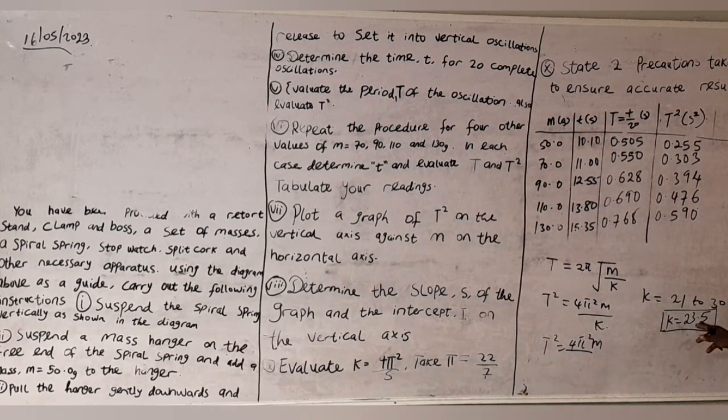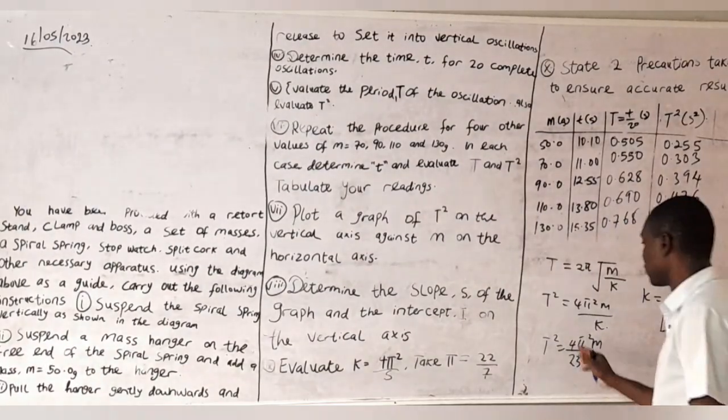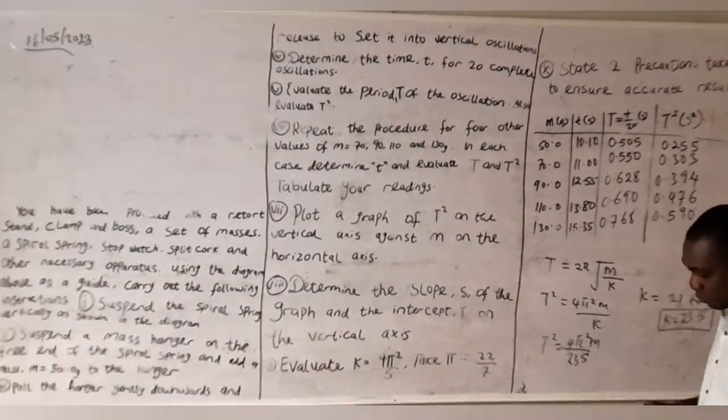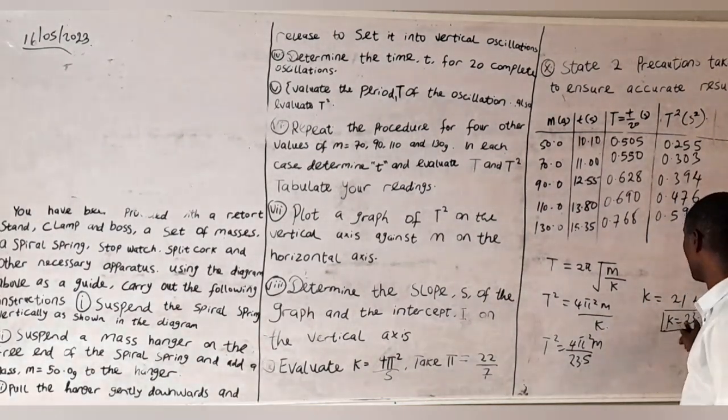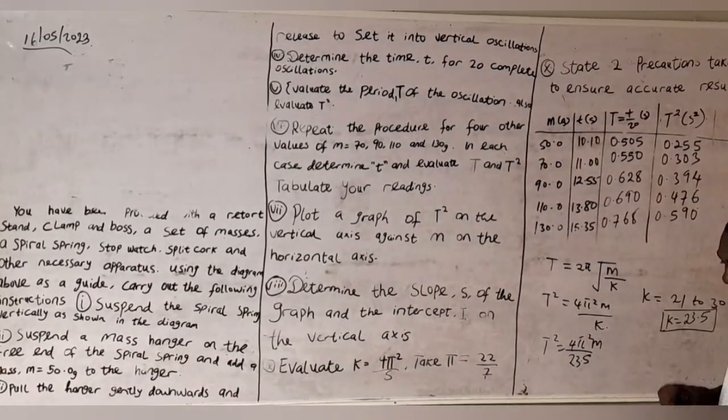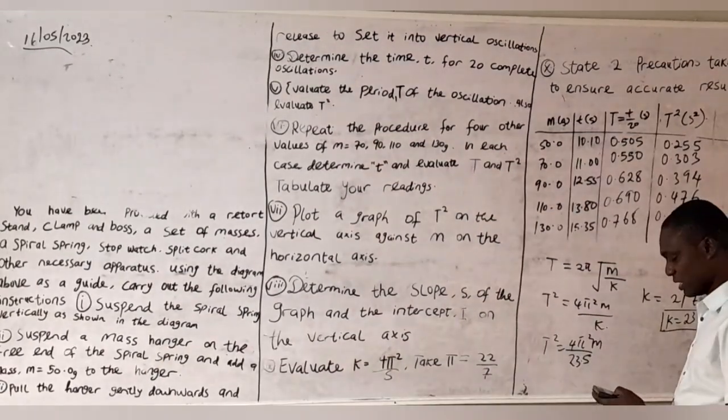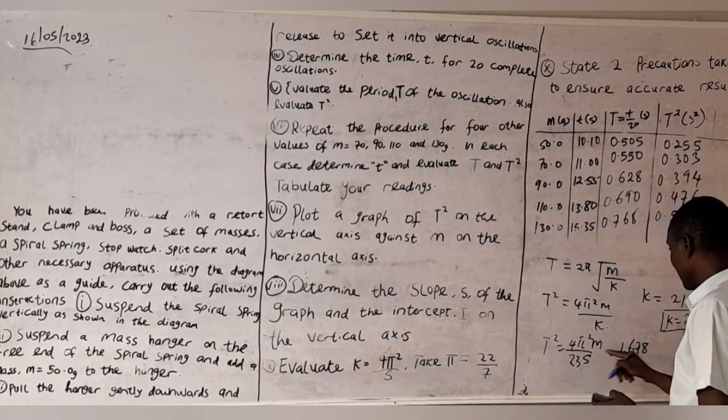You can choose any values between this range. It will be okay for you. At the end of your result, when you plot the graph, you are going to have a value that is close to this, if not exactly this. So I have 23.5 as my k. I'm going to have 4 times π is 3.14, then square it, then divide it by the value of k, 23.5. That gives me 1.678 m.